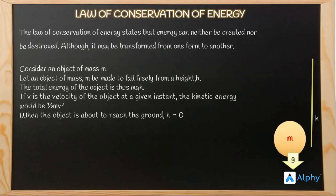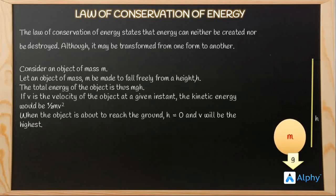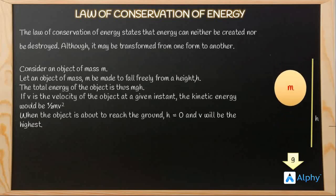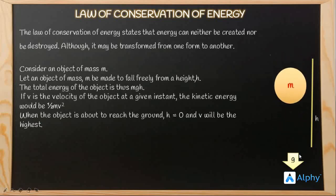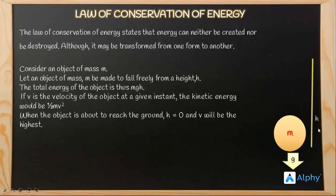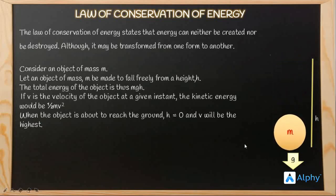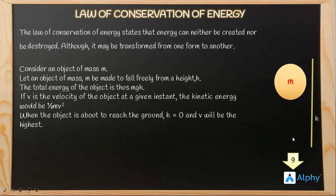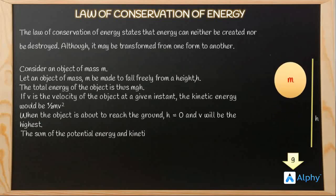Only the potential energy exists at the start point. When the object reaches the ground, h equals zero and v will be the highest. Therefore the kinetic energy will be the largest and potential energy is the least. When it is about to reach the ground, h is zero, so potential energy mgh becomes m×g×0, whereas v is the highest, so half mv squared is the most. Hence kinetic energy is the most and potential energy is the least.